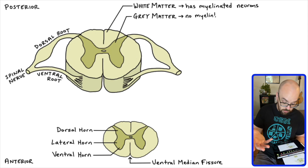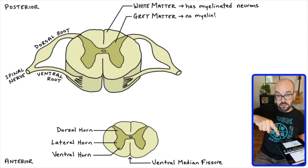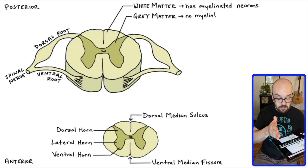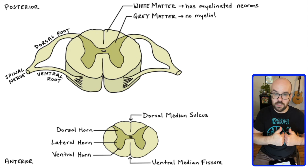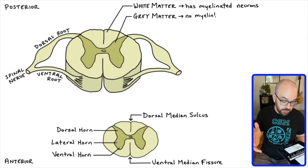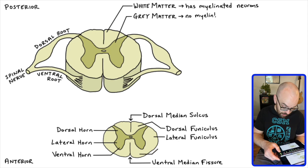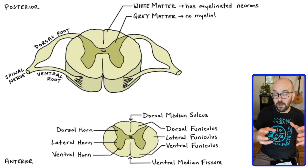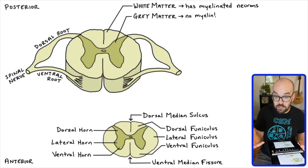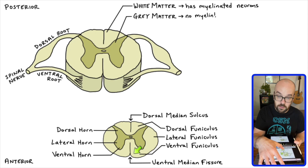On the ventral side, we have what we call the ventral median fissure — ventral because it's on the anterior side, median because it's in the middle of the spinal cord, and fissure referring to a crevice that comes in. On the dorsal side, we have the dorsal median sulcus — an indentation in nervous tissue. The white matter can also be divided up into three sections: the dorsal funiculus, the lateral funiculus, and the ventral funiculus. A funiculus is a bundle of neurons that send signals up and down, surrounded by connective tissue, located in the white matter regions of the spinal cord.